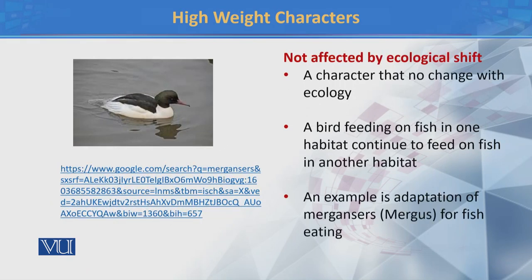अब हम उन characters की बात करते हैं जो ecological shift के नतीजे में change नहीं होते — ऐसे characters भी high weight characters कहलाते हैं. For example, यह देखा गया है कि बहुत सारे birds ऐसे हैं जो एक particular habitat में रहते हैं और एक particular prey यानी fish पर feed करते हैं. जब उन्हें किसी नए habitat में shift किया जाता है तो वो वहाँ भी अपनी feeding habit change नहीं करते — पहले भी fish consume कर रहे थे तो अब भी fish consume कर रहे हैं. इसका मतलब है ecological shift की वजह से उनमें change नहीं आया. ऐसे characters high weightage characters कहलाते हैं.